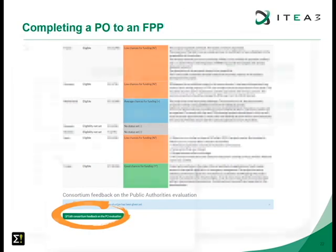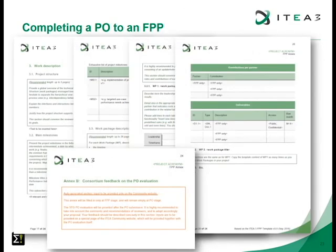Looking at the FPP and the changes from PO to FPP: in the work package descriptions there are new chapters per work package where you need to explain which partner is active in which work package and what will be done, giving a more detailed project overview. There is also a new auto-generated Annex B where all feedback from the consortium — including the steering group and PA feedback together with the consortium's responses — is compiled, and this all ends up in a full project proposal where all information is merged into one single document.